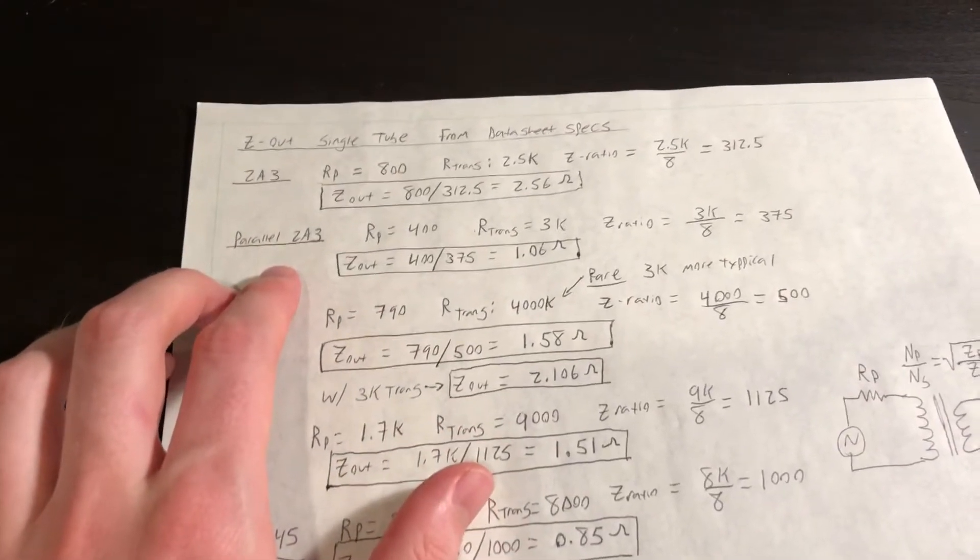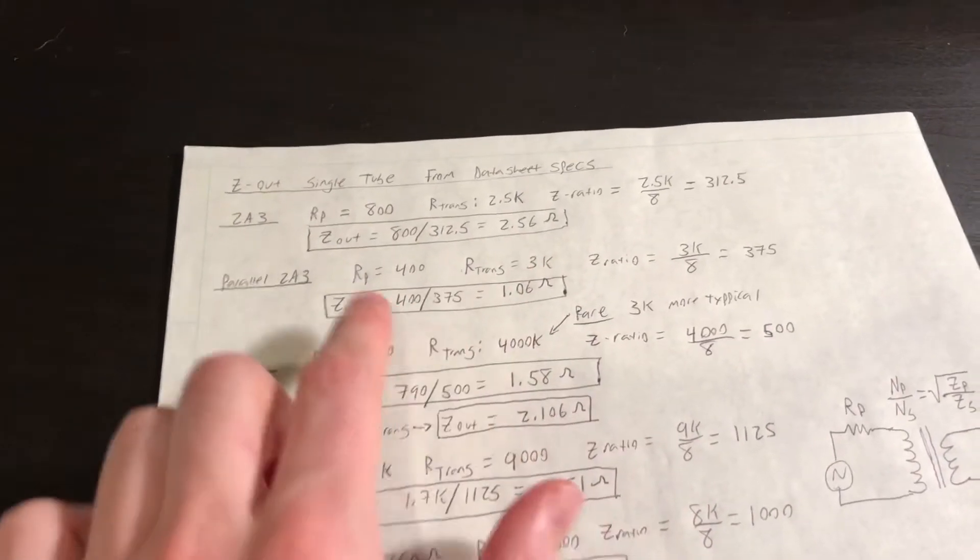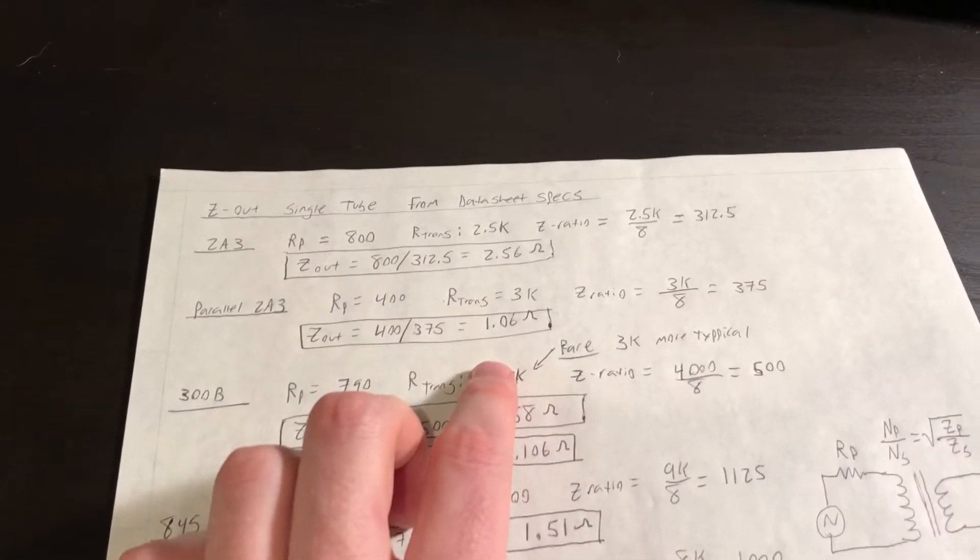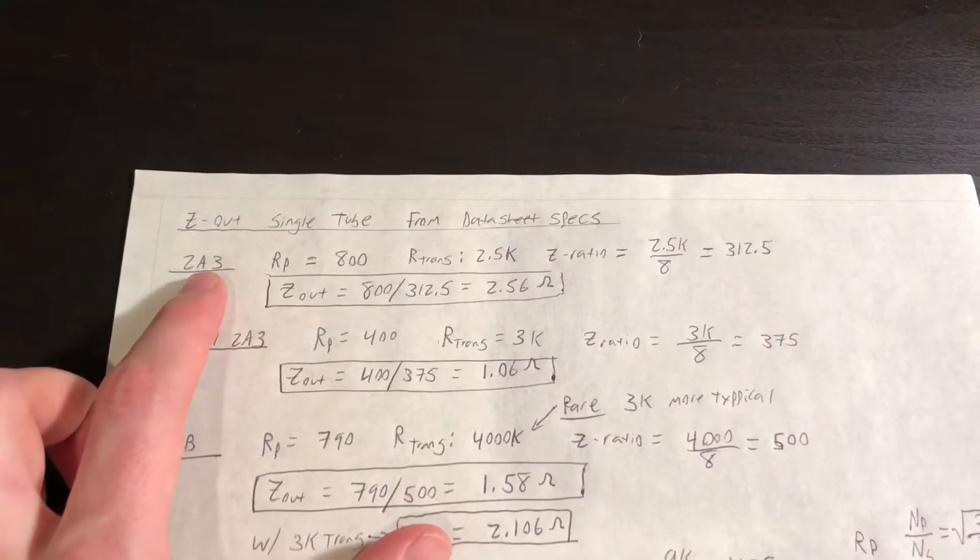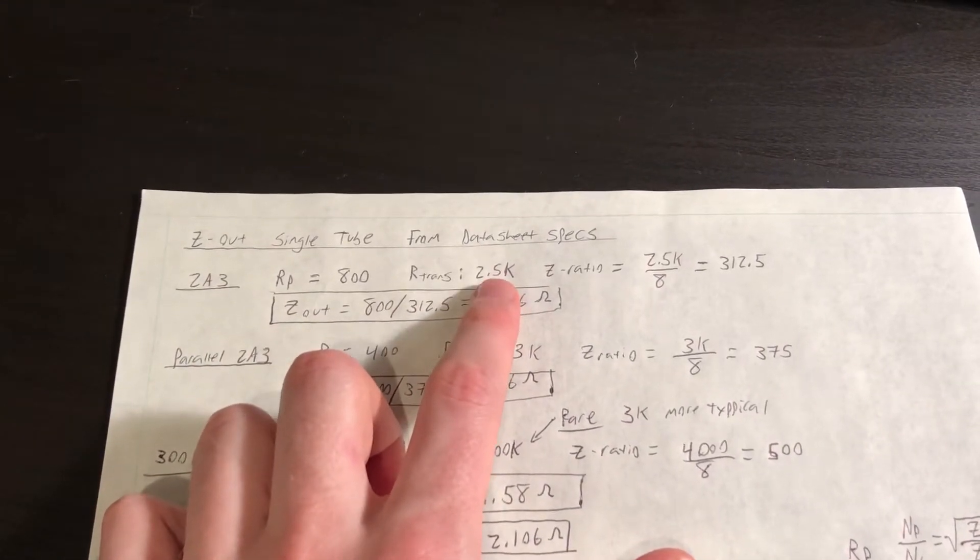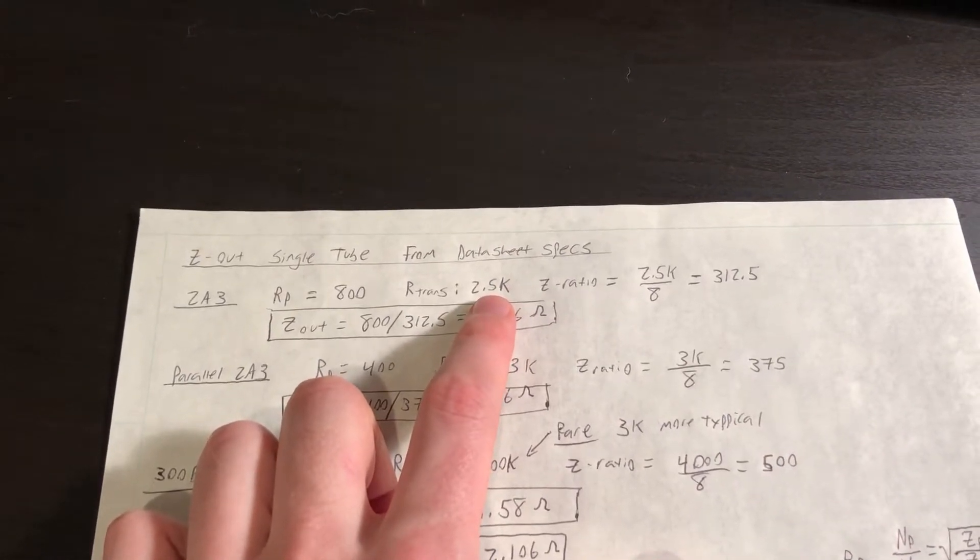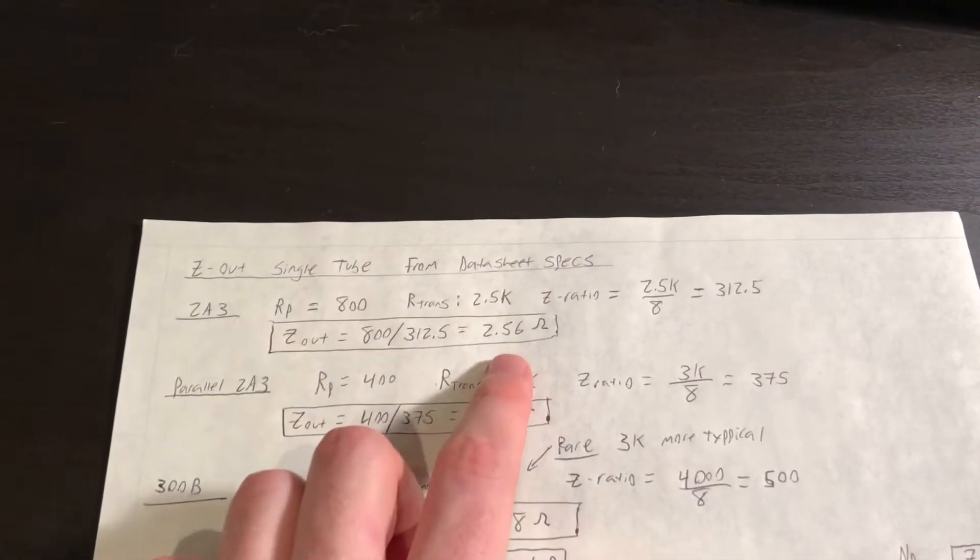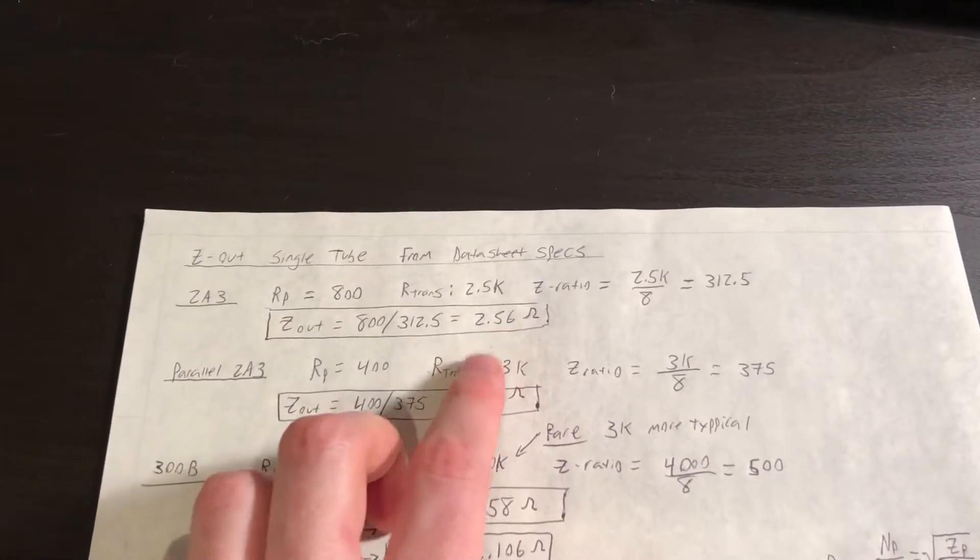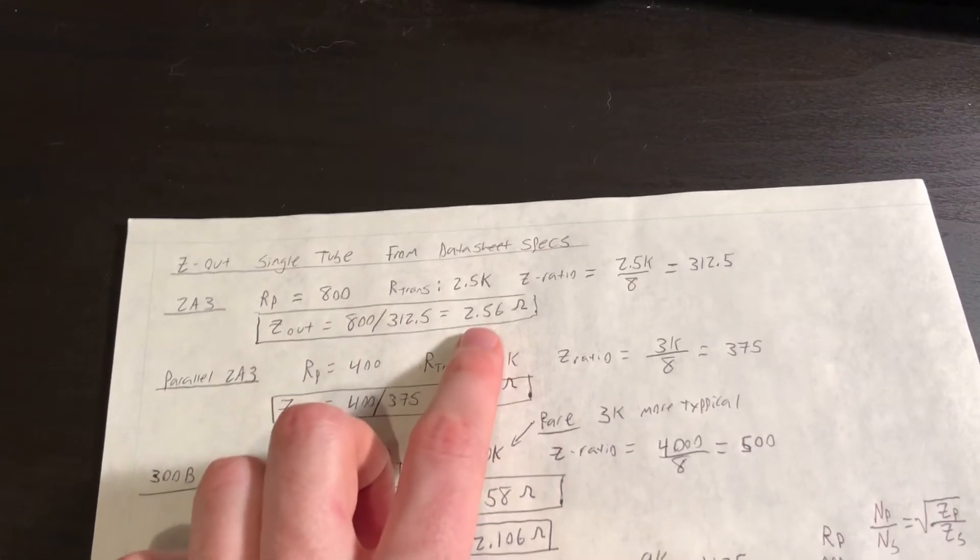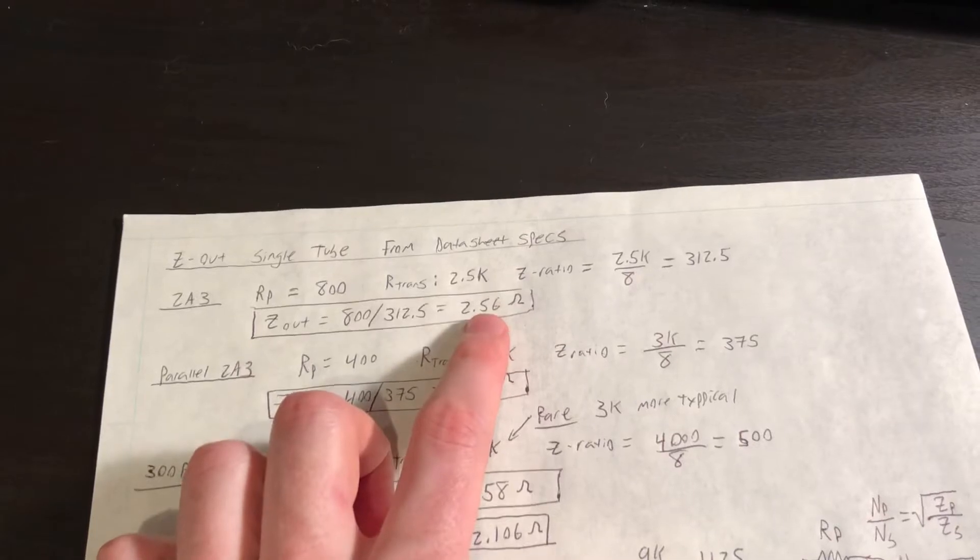This chart is a couple different output tube configurations in single-ended, and using a transformer impedance that's nominally recommended in these data sheets, we can get an estimated output impedance. So a single-ended 2A3 tube into a 2.5K ohm transformer, which I think is from the data sheet for the 2A3 tube, probably from RCA, the output impedance is 2.56 ohms in an ideal world. As the tube ages and over its lifespan, and once you add in the losses of the transformer, this number will become quite a bit larger.